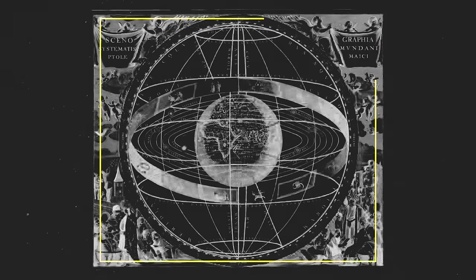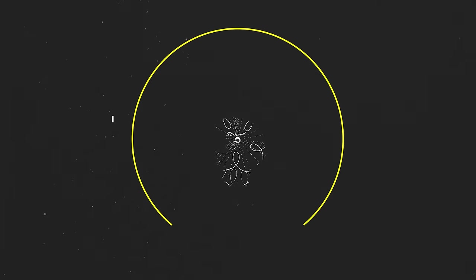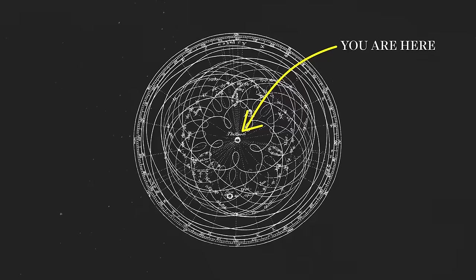Retrograde motion was baffling to early astronomers, who thought that Earth was stationary and at the center of the solar system.